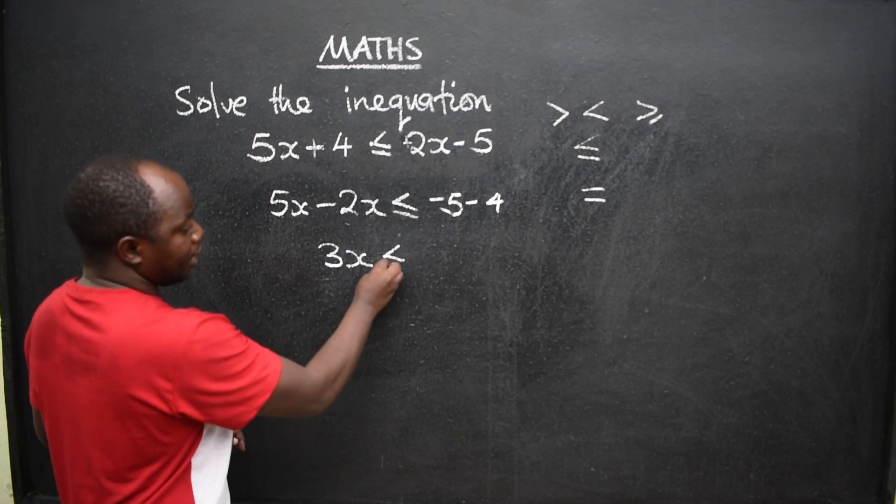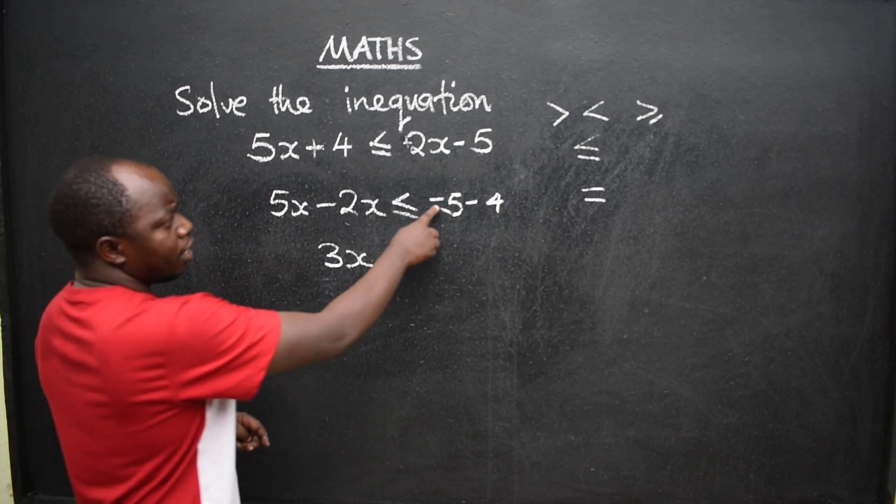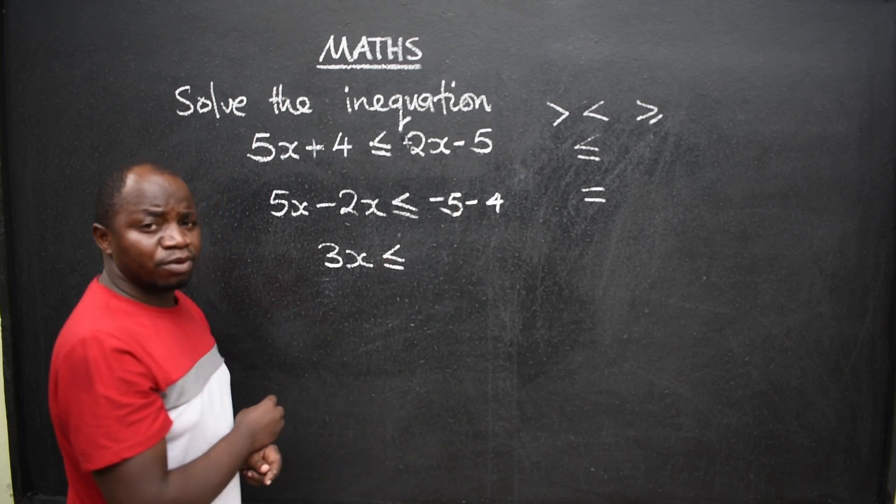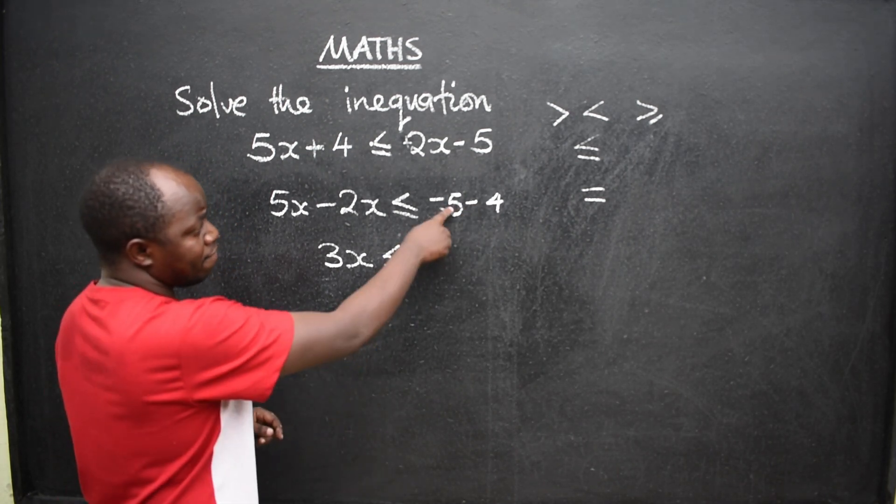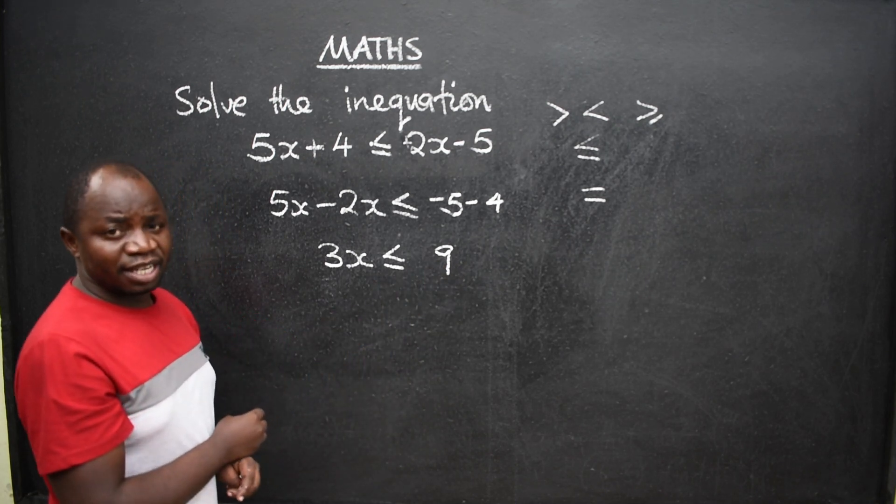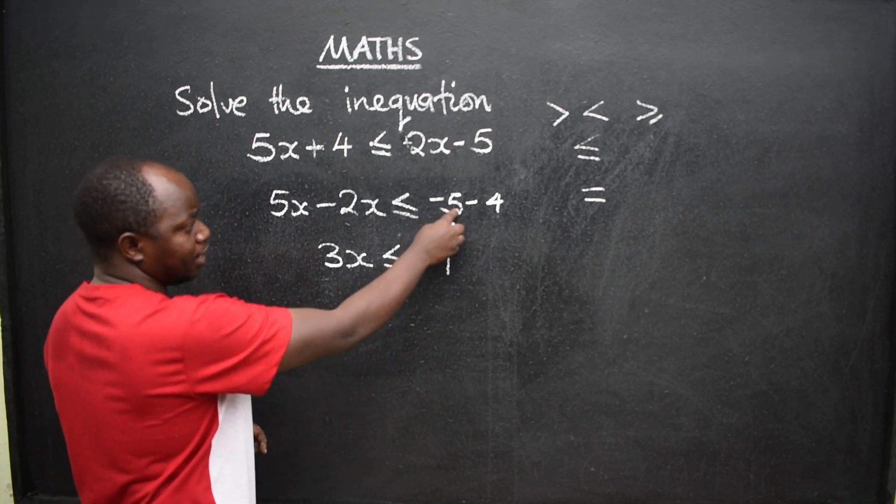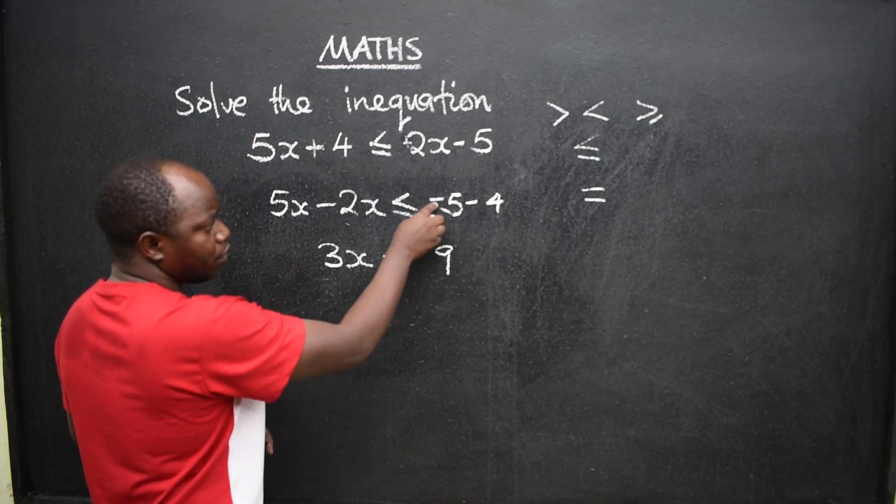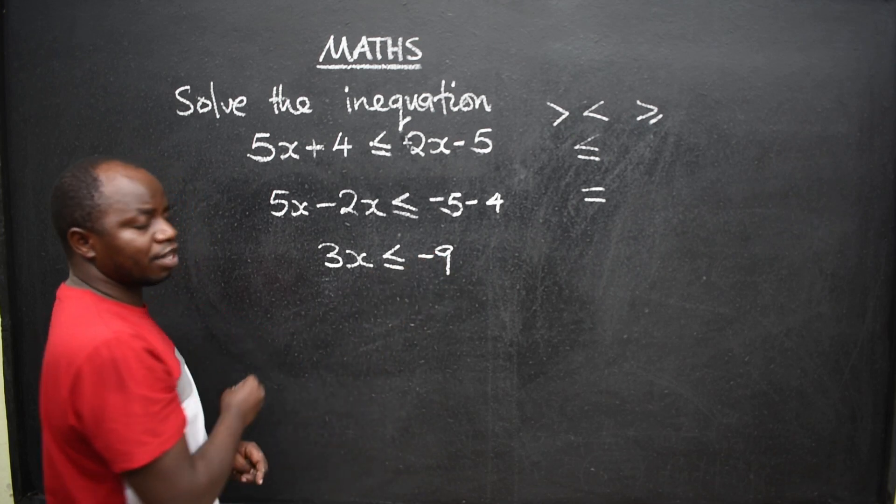The inequality less or equal to negative, negative, you are supposed to add. 5 plus 4 will give us 9. Always get the sign from the bigger number. 5 is bigger than 4. So it has got a negative. So this will give us negative 9.